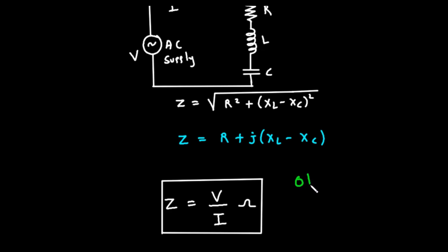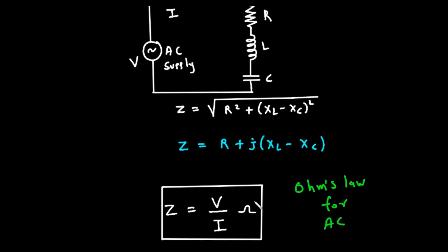It states that the total impedance, Z, is the ratio of the AC voltage, V, to the AC current, I. This simple-looking formula elegantly accounts for resistance, all forms of reactance, and all the phase shifts between voltage and current.